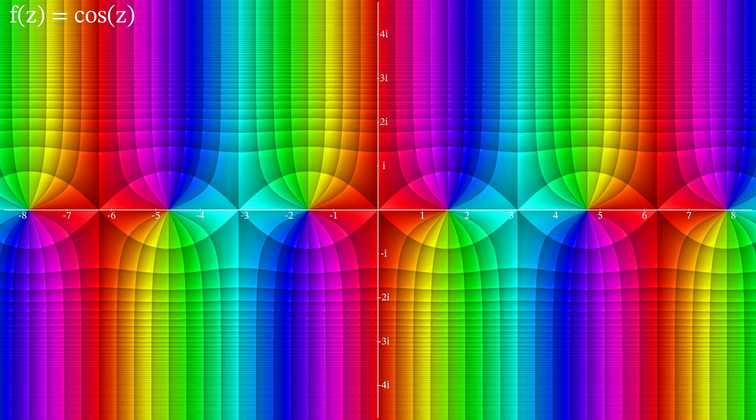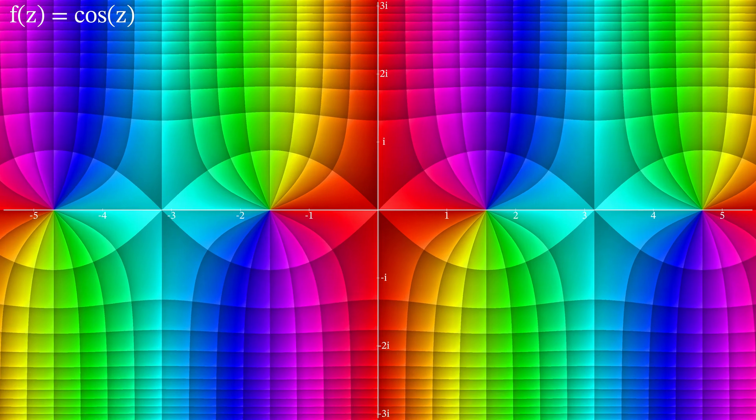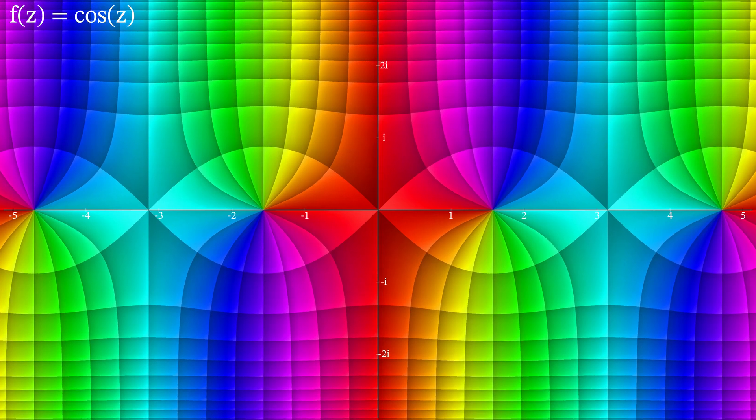The enhanced phase portrait for cos of z looks like this. The lines still cross at right angles. Our phase portrait now has a sense of scale that was previously lacking in 2D.